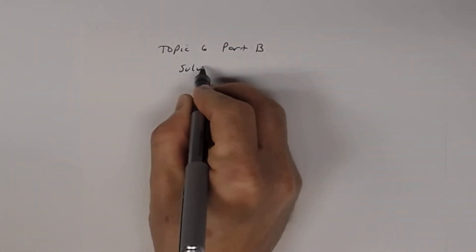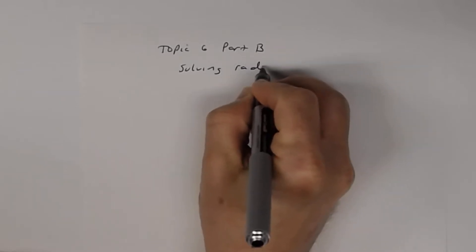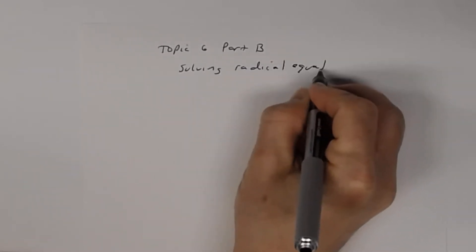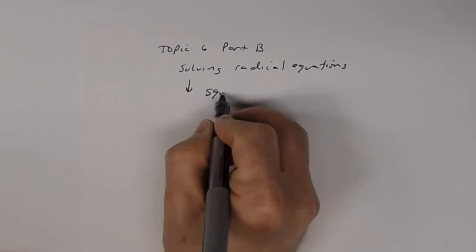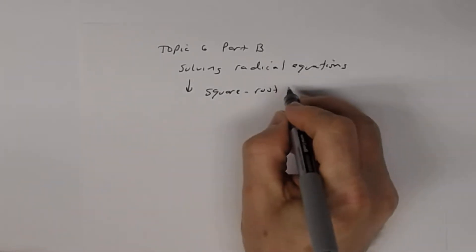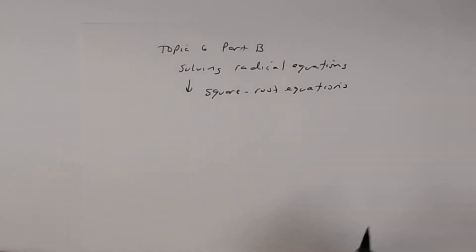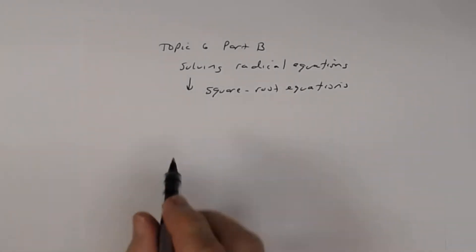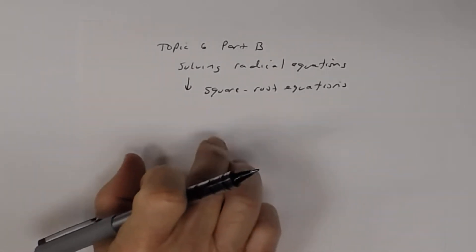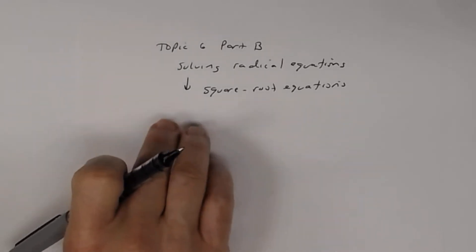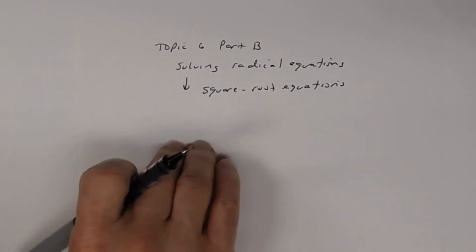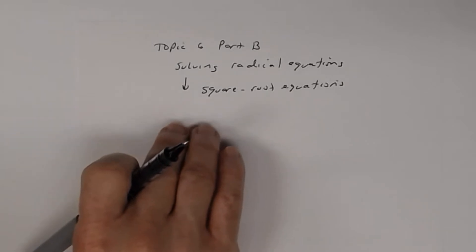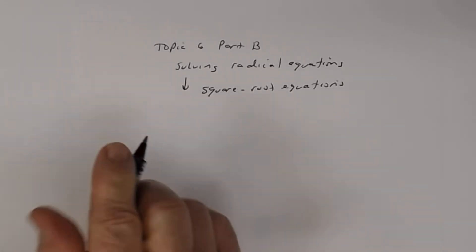In Topic 6, Part B, we're going to start looking at solving radical equations — more specifically, square root equations. This is just a basic review, so make sure you go back through the lessons to understand the process and why we do certain things when solving radical equations. With the small amount of time we have, I'll just work some problems.